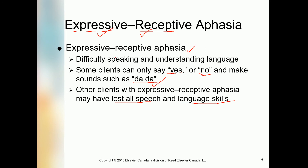Other clients with expressive-receptive aphasia may have lost all speech — a complete loss of speech and language skill. They cannot understand what others are telling them, and they cannot express the idea they want to. This is a complete loss of verbal communication. The most important way to understand our clients is through nonverbal communication — nonverbal cues, understanding facial and physical gestures and posture, which is a bigger part of communication.